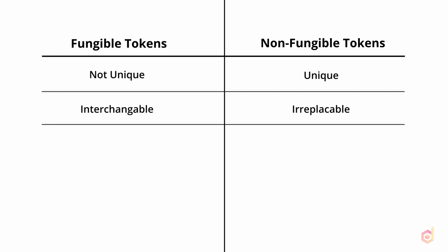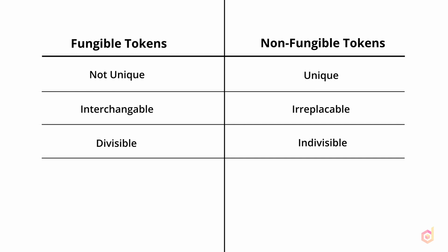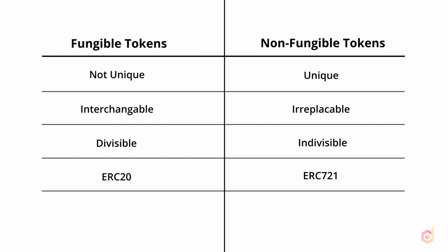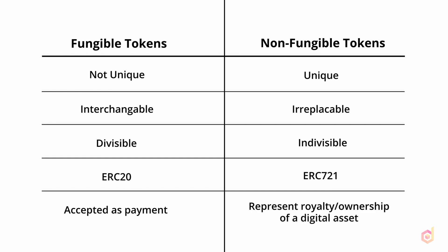Fungible tokens are divisible — if I give you $10 and in return you give me two $5, that's acceptable. But non-fungible tokens are indivisible. On the Ethereum blockchain, fungible tokens follow the ERC-20 standard, whereas non-fungible tokens follow the ERC-721 standard. Fungible tokens can be used as a payment method, whereas non-fungible tokens are used to represent the royalty or ownership of a digital asset.